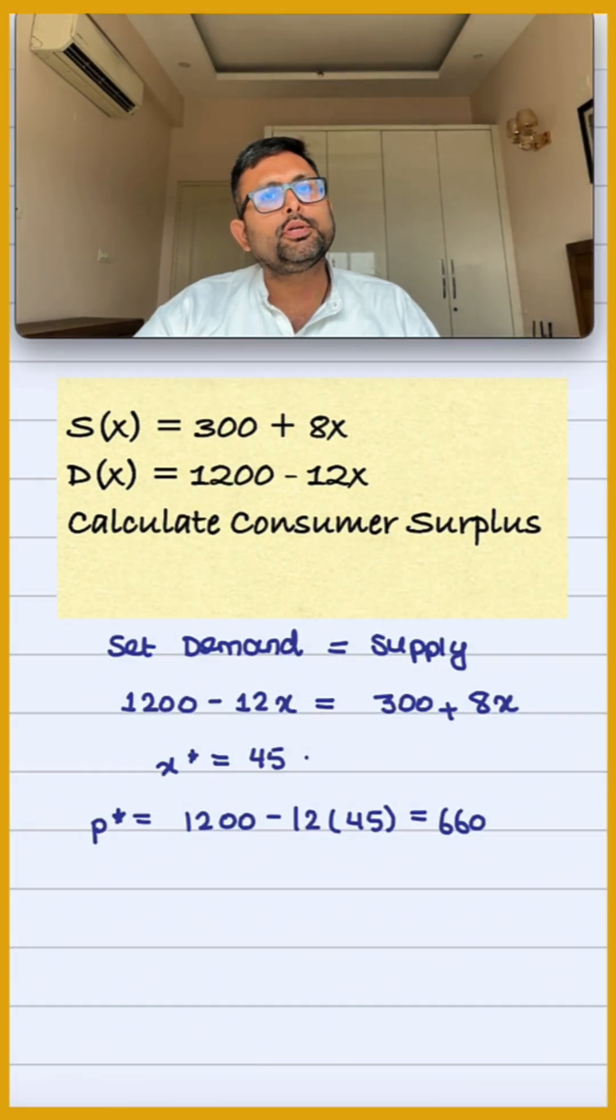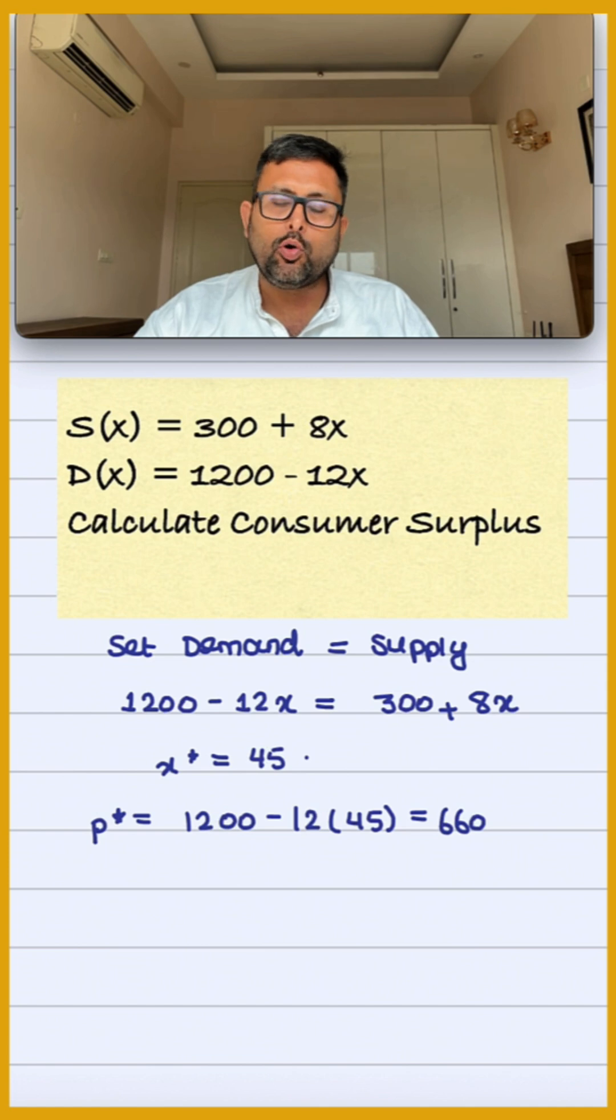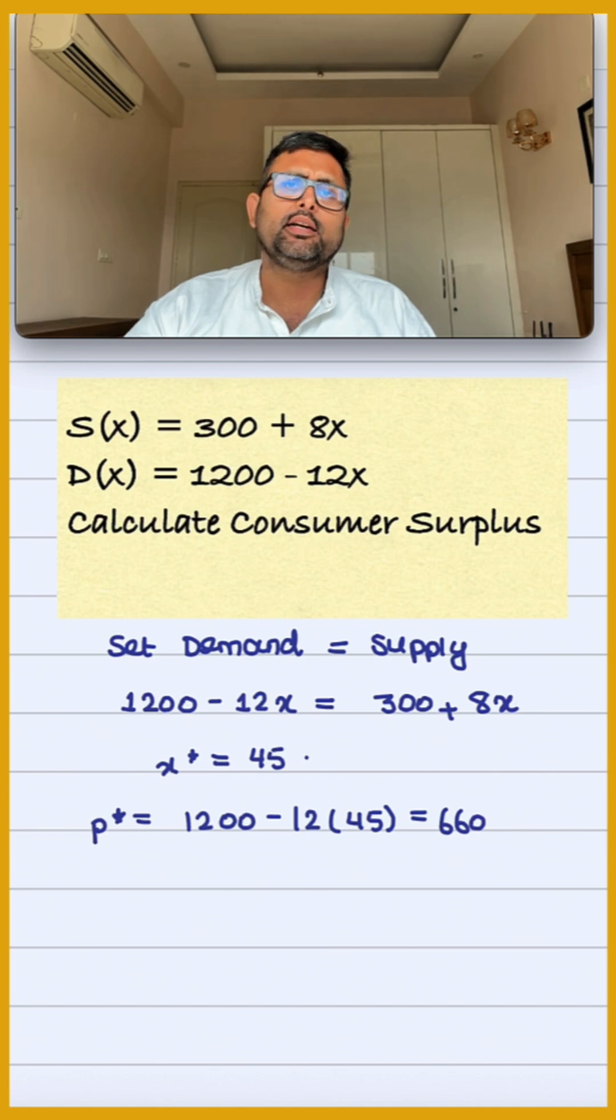By setting demand equal to supply, we get the equilibrium quantity as 45. Substituting x* in either demand or supply gives us the equilibrium price of 660.